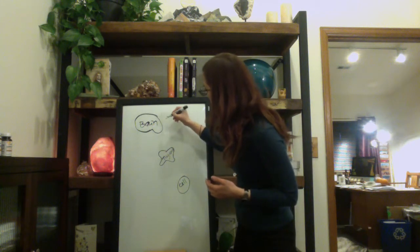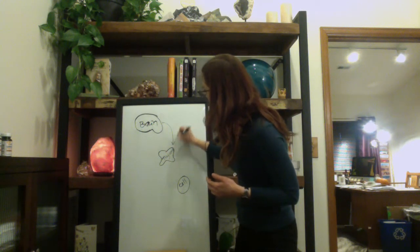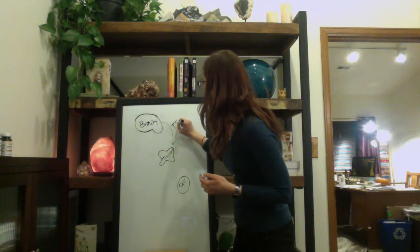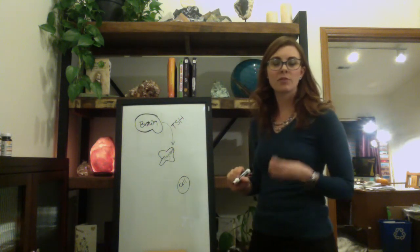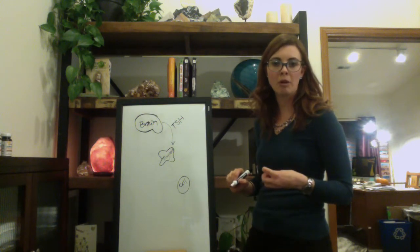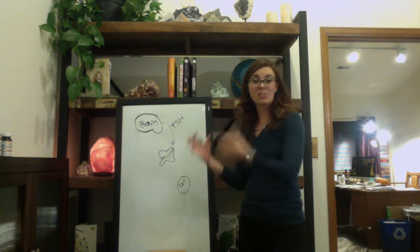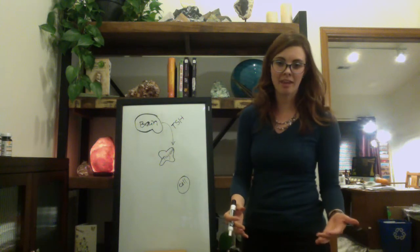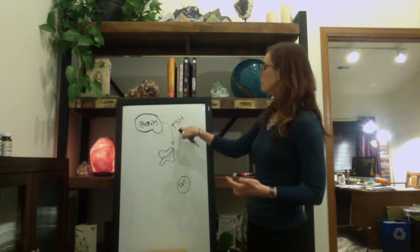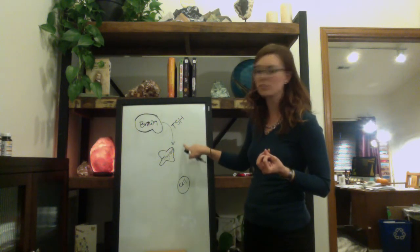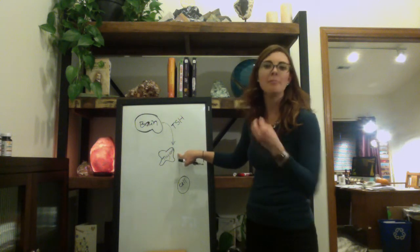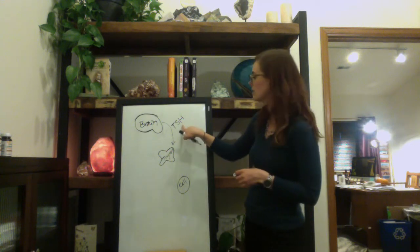So your brain communicates with your thyroid gland with a hormone called TSH. TSH stands for thyroid stimulating hormone, which means it tells you what it does. It's a hormone that stimulates the thyroid. So this hormone isn't actually the coal in your furnace. It just tells the thyroid to make the coal.